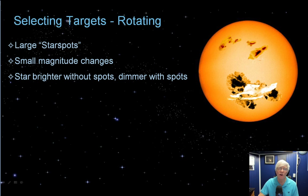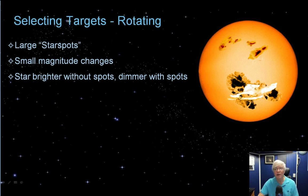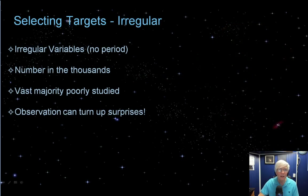Some variable stars are characterized by the rotating into view of very large star spots — like our own sun's sunspots, but much larger. As the spots rotate to the Earth side of the star, the total surface brightness fades appreciably. You could estimate the rotation period of such a star by monitoring the change in magnitude. Finally, don't forget about the thousands of irregular variable stars — literally thousands in VSX. A large part of them don't have any defined period but they do vary, and these poorly-studied stars could produce some very interesting surprises.